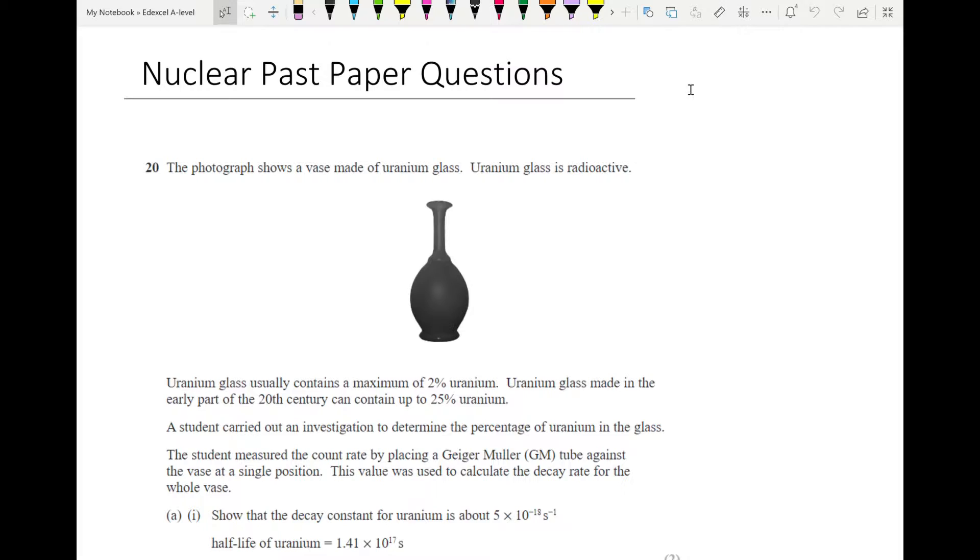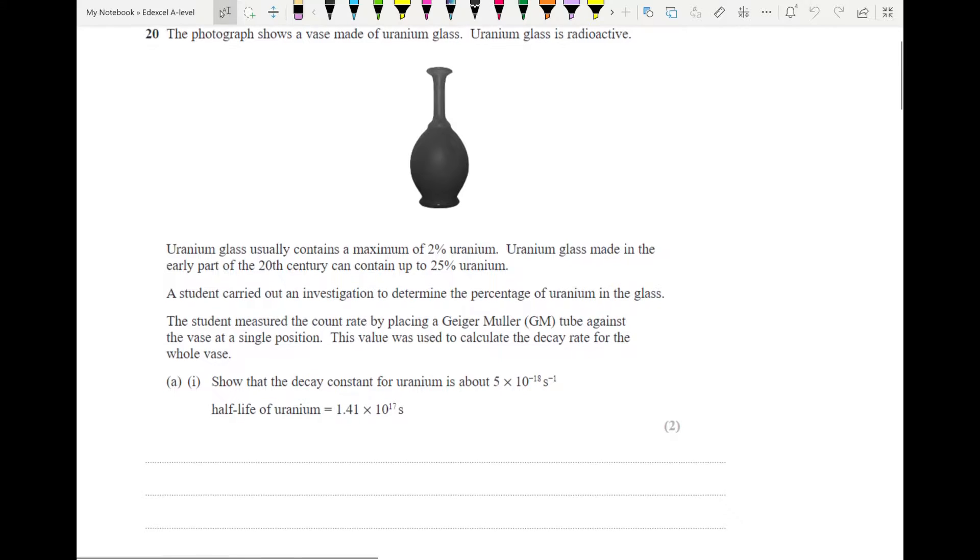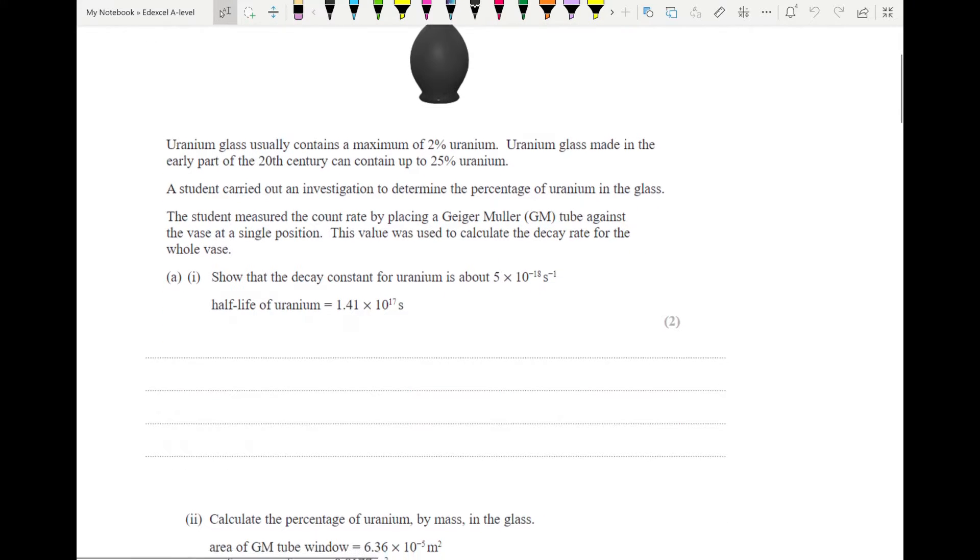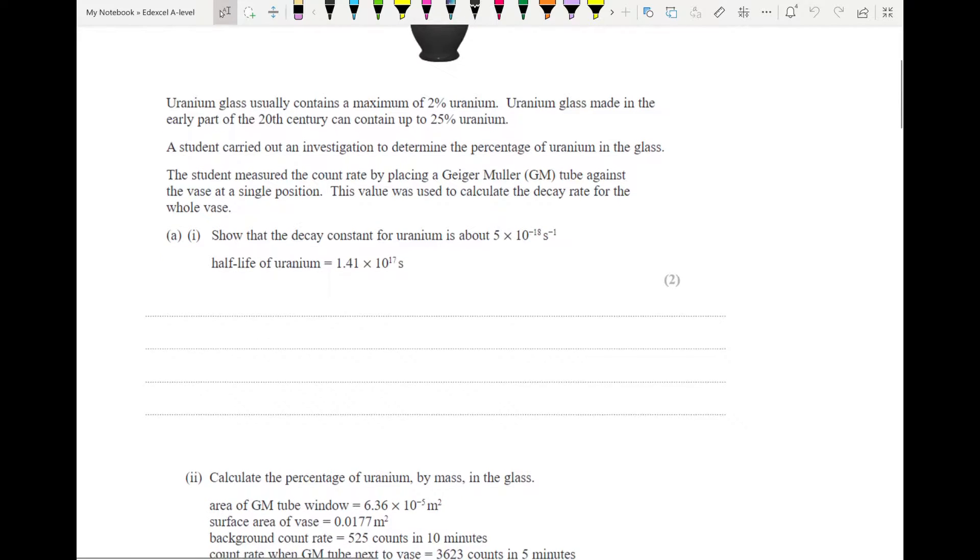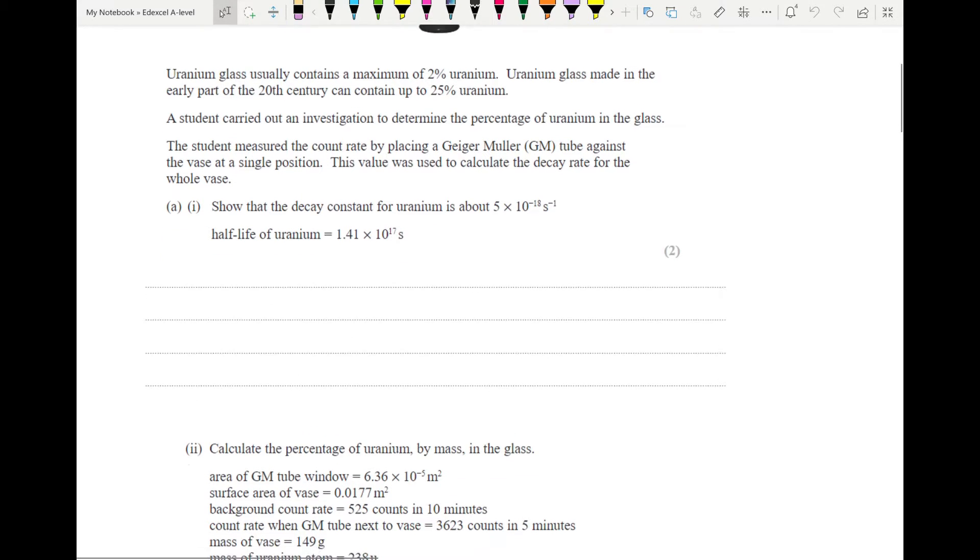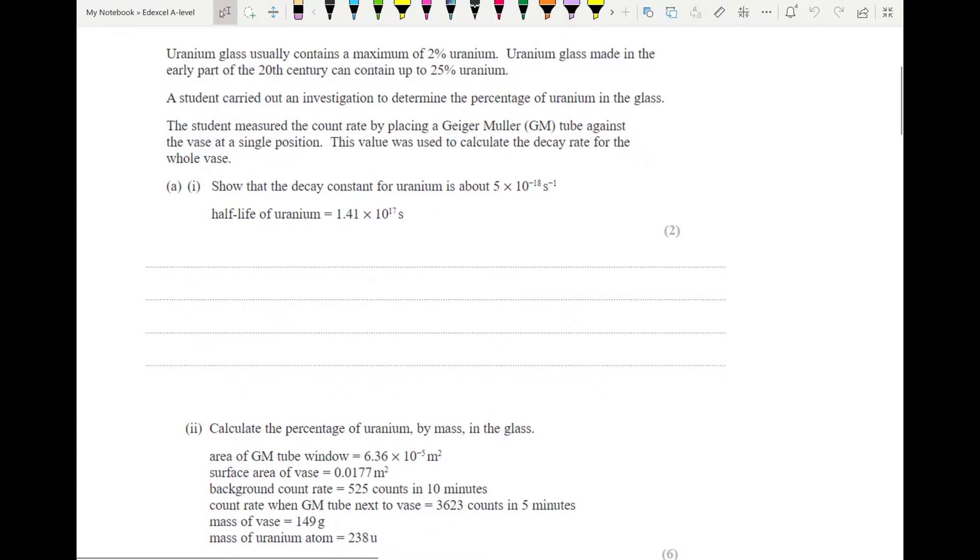The first one is about uranium glass. It contains a maximum of two percent usually, but ones from the early part of the 20th century can have up to 25 percent. This student carried out an investigation to determine what that percentage was. The student measured the count rate by placing a GM tube against the vase at a single position. This value was used to calculate the decay rate for the whole vase, to show that the decay constant for uranium is about that.